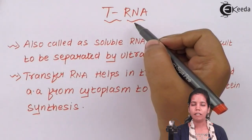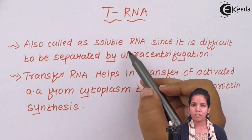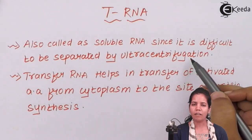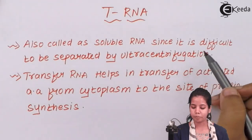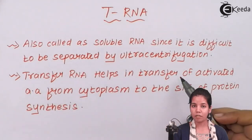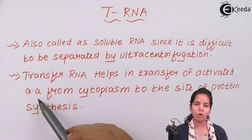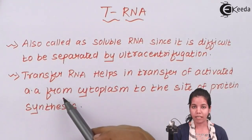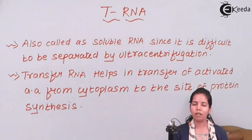tRNA, or transfer RNA, is sometimes called soluble RNA since it is very difficult to separate tRNA from the mixture of mRNA and RNA by centrifugation. The basic thing tRNA does is help in the transfer of activated amino acids. When an anticodon and codon combination is done, an activated amino acid is formed and transferred from the cytoplasm to the site of protein synthesis by tRNA.